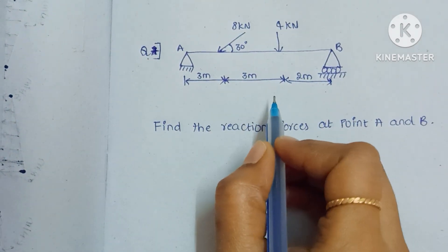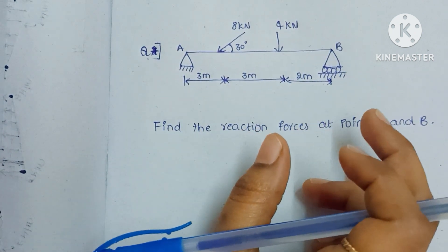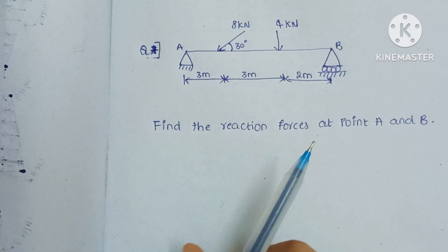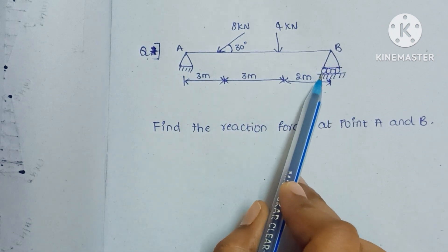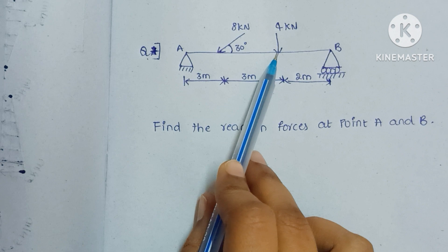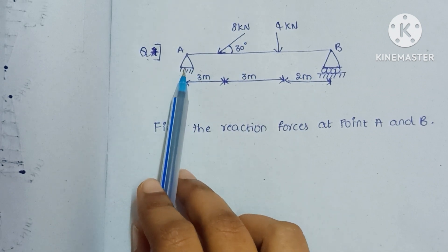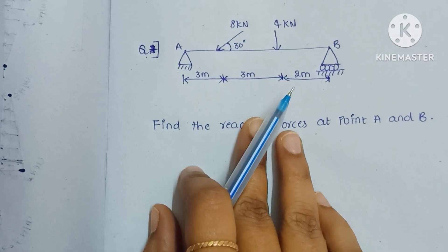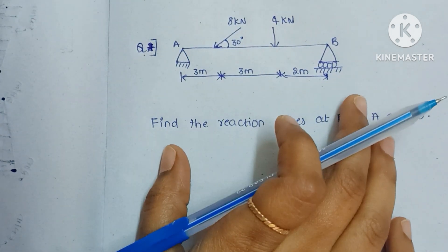Hi friends, welcome to my channel NM Learn. Today I am going to solve a problem for finding the reaction forces at points A and B. They are given a hinged support and a roller support, one inclined force, and one straight force like a point load. We studied about types of loads and types of supports in the first class of Strength of Materials or Applied Mechanics, so if anyone did not watch that class please go and visit it first.